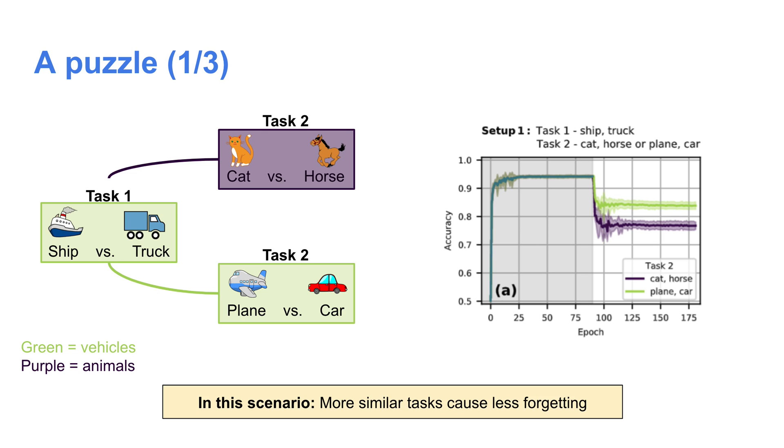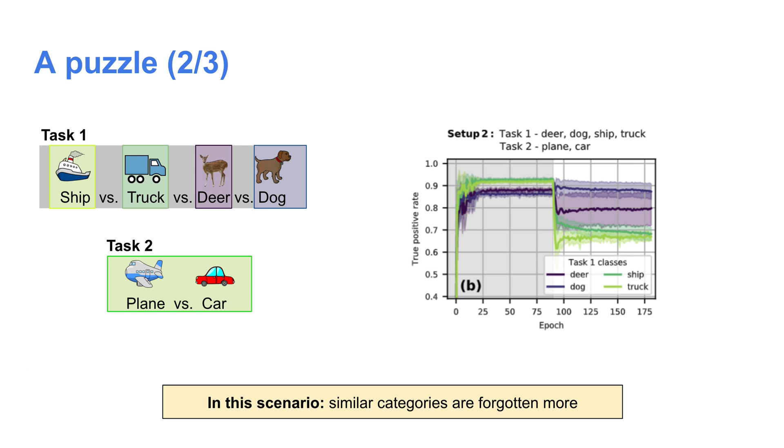This pattern turns out to be consistent across networks and splits. So it really seems like we can say when subsequent tasks are more similar to one another semantically in this scenario, the network forgets less.